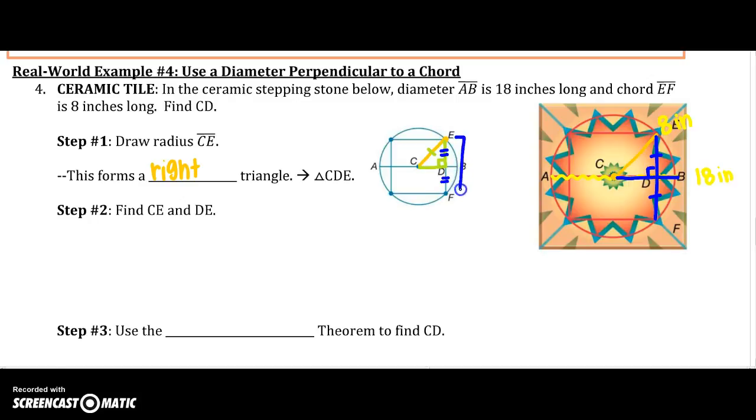We know that because I have a chord that is perpendicular to the radius, I know that this is congruent to that. So I know that D, E is congruent to D, F. And because the whole length is 8, I know that D, E is 4.